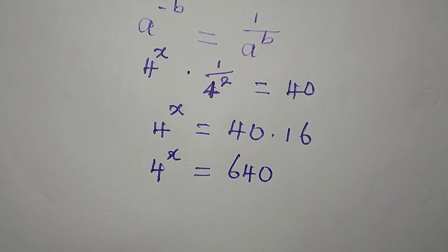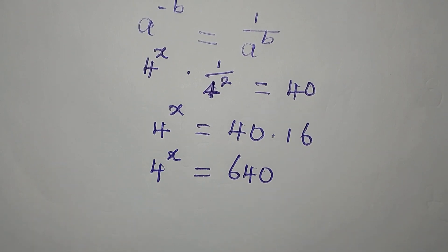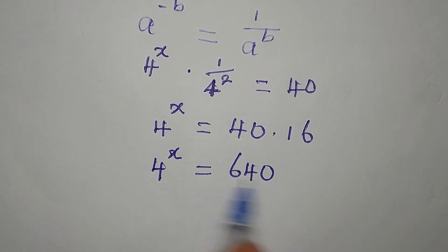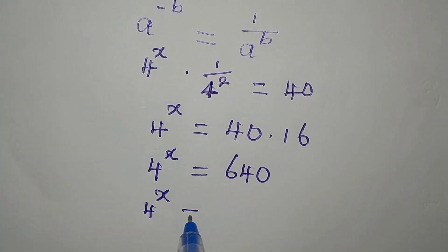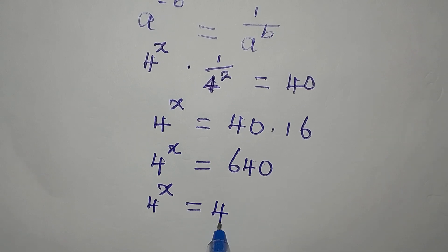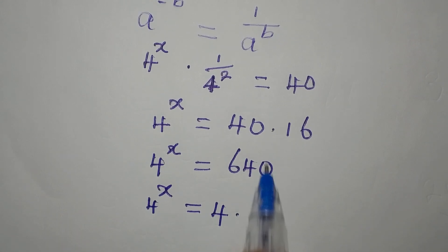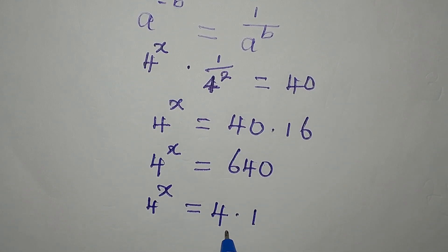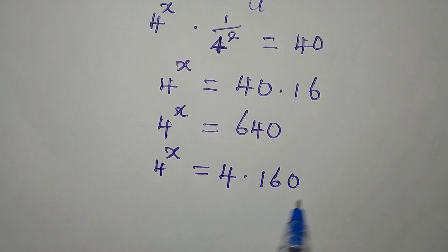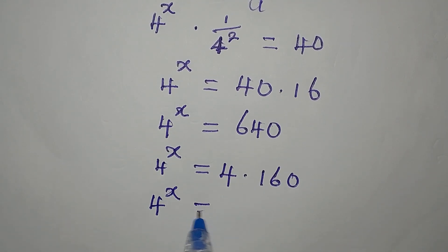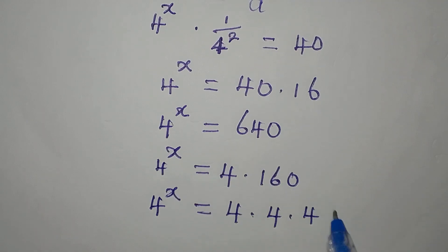From here, I want to write 640 with 4 as the base, but that is not possible directly. So let's get 4 out of 640, because 4 is a factor of 640. So 4 to the power of x equals 4 multiplied by 160. Then 4 is still a factor of 160, so 4 to the power of x equals 4 times 4 times 40.